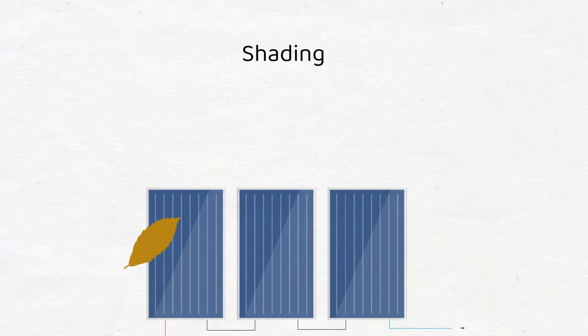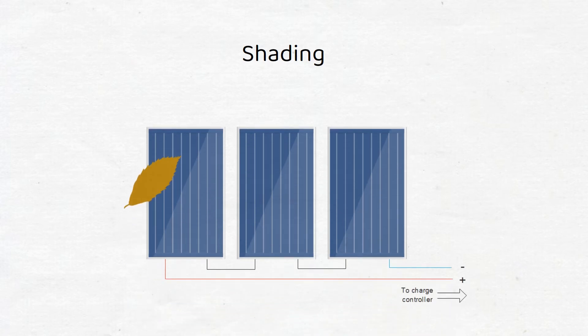Now, you might think that series is the best connection to make, because it will reduce your wiring cost. That is true if there is no shading. If, for example, there are 3 solar panels and one has shade, the whole string will suffer a reduced current output, because shade has impact on current, not voltage.